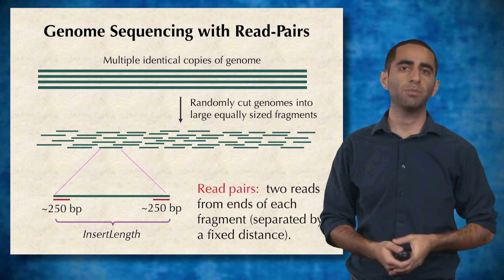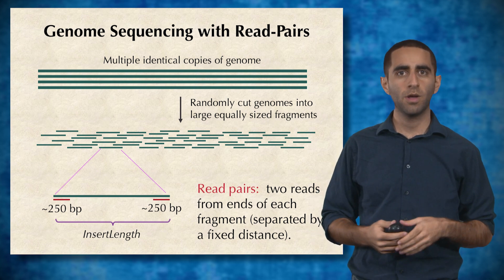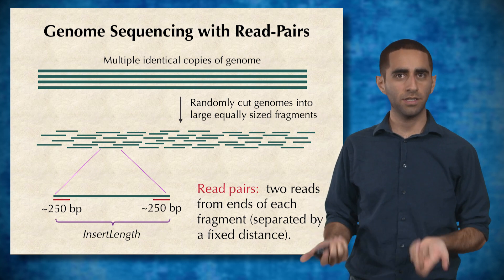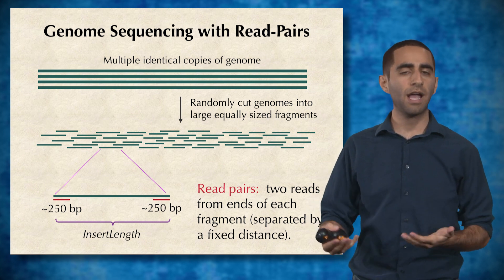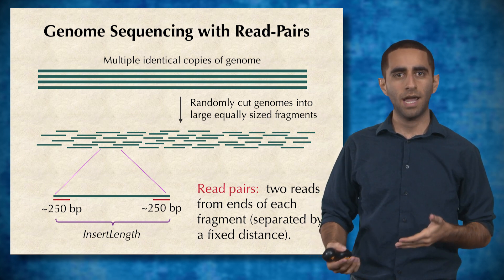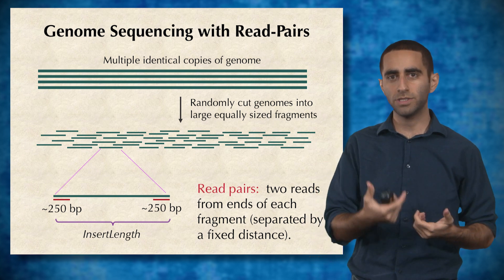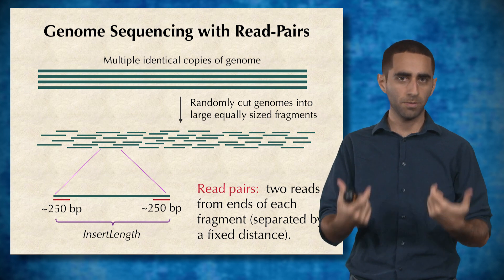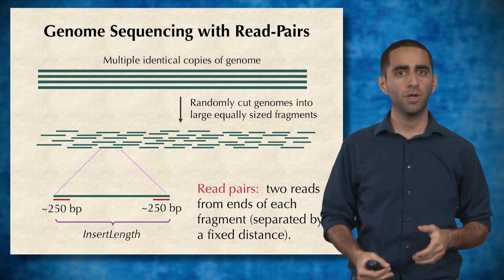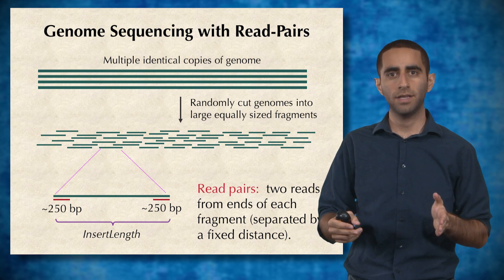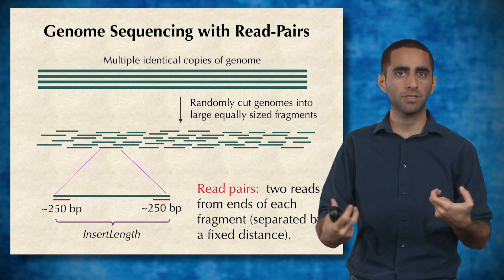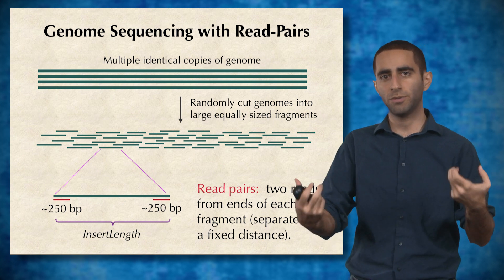We're going to take a sequencing approach where we take multiple copies of the same genome, randomly fragment it into tiny pieces, and sequence each of these pieces into small chunks called read pairs, where a single fragment of known length has both of its ends sequenced — so we know the sequences of both ends.